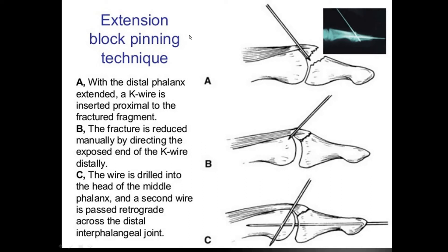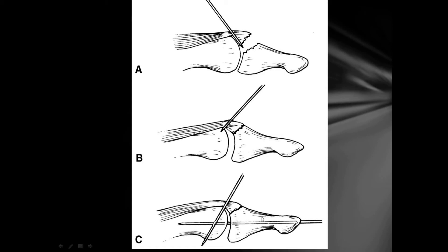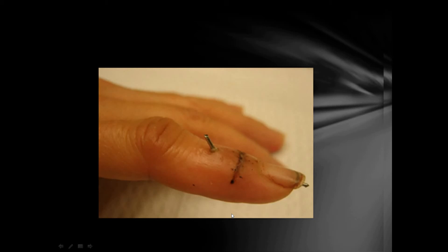In the extension block pinning technique, two K-wires are used. One K-wire is passed through the distal phalanx tip, across the joint held in an extended position, while the other K-wire stabilizes the avulsed bone fragment.